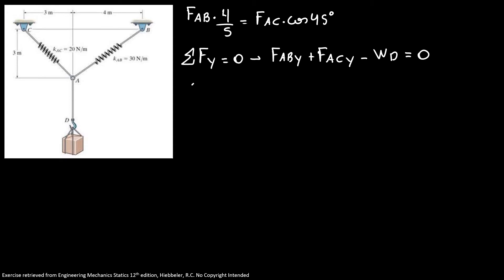My FABy is 3 FAB over 5 plus FAC times sine of 45 degrees equals 2 times 9.81. That's our gravity.